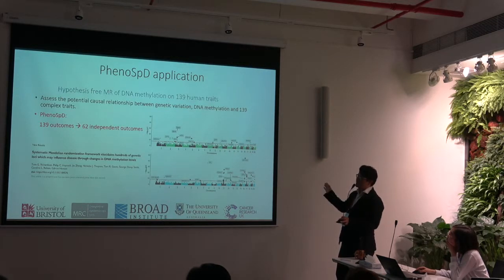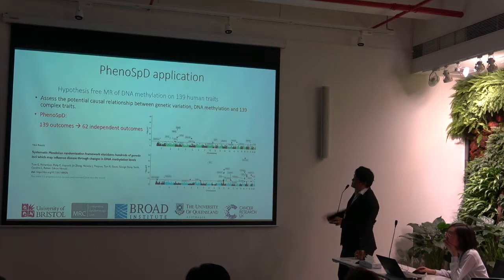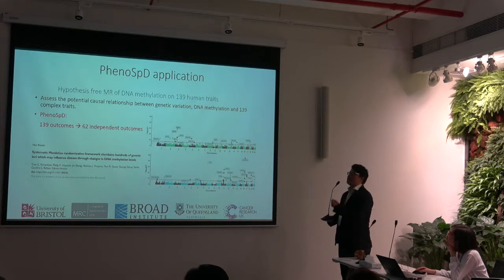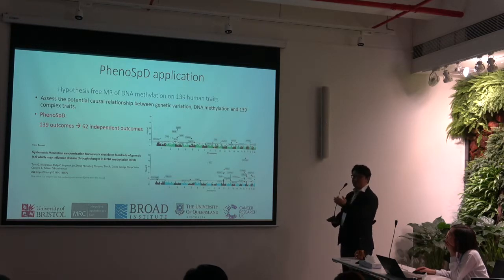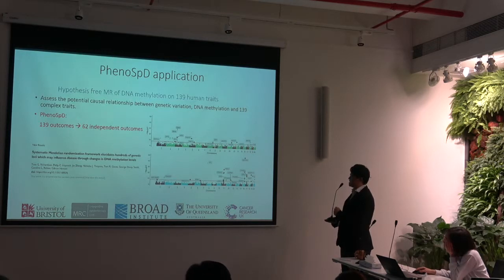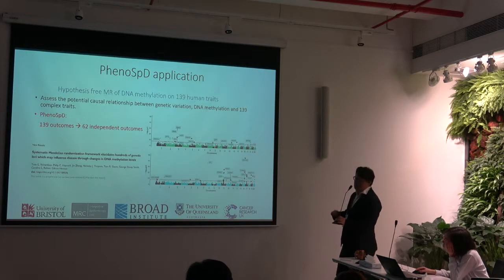PhenomeSPD got its very first citation recently. We applied hypothesis-free Mendelian randomization to DNA methylation across the whole genome on 139 human traits. Those 139 traits were selected because we believe they are all unique traits. Yet when we applied PhenomeSPD, it reduced the number of tests by half — meaning that even among those 139 diseases we believed were distinct, the correlation is still substantial, which really proves the value of PhenomeSPD. This paper is now on a preprint archive as well.